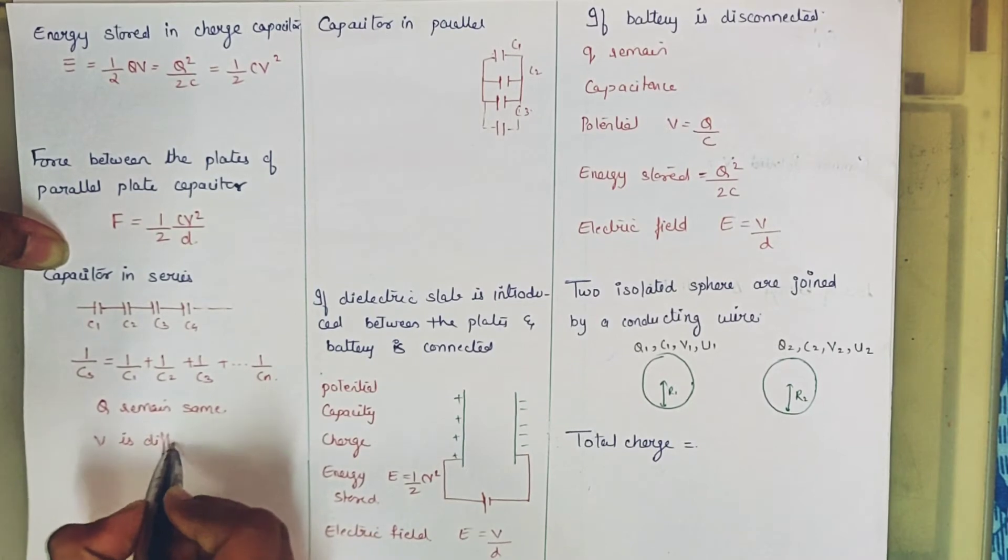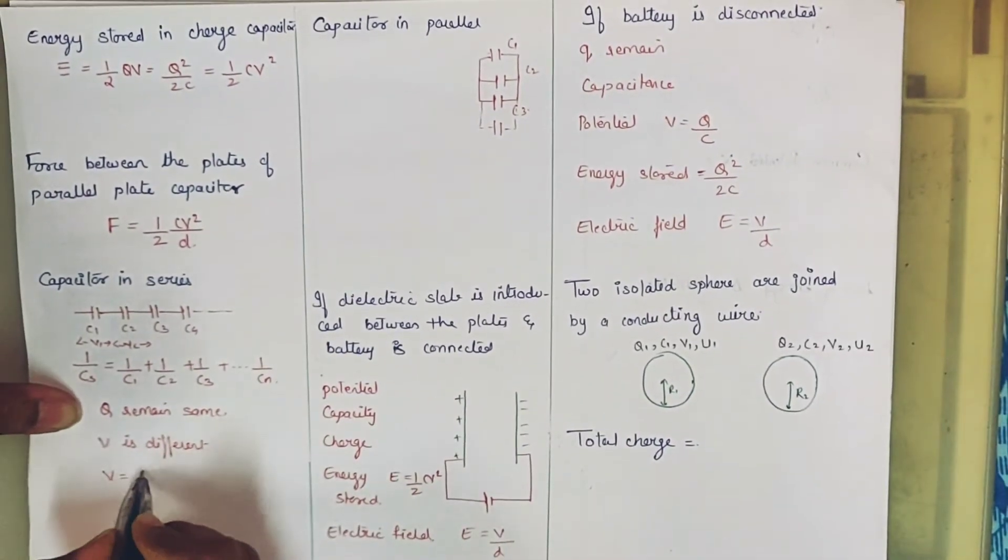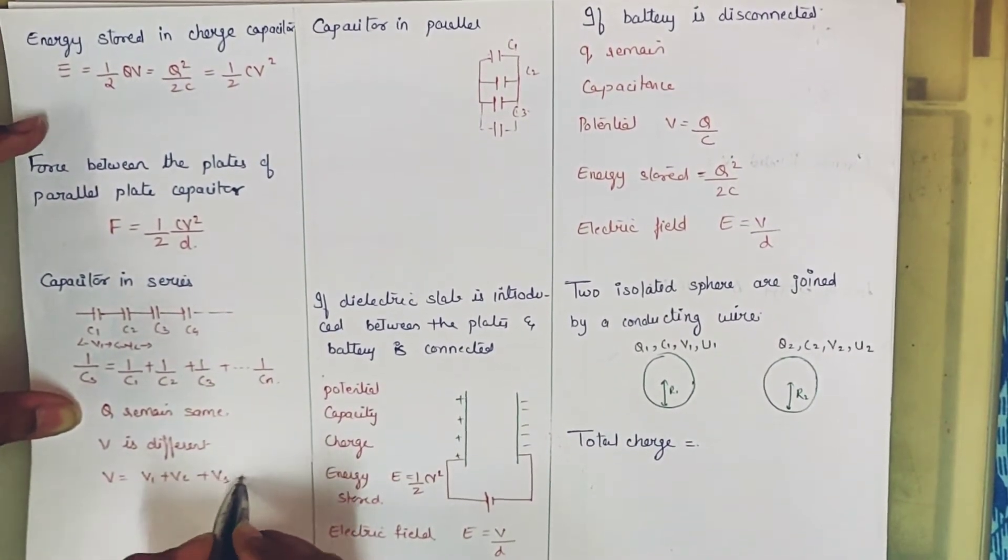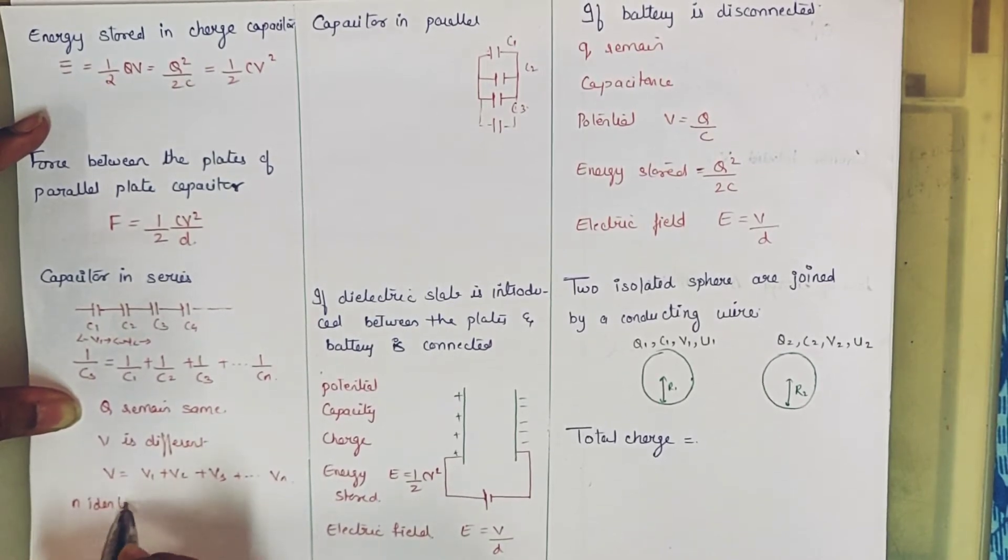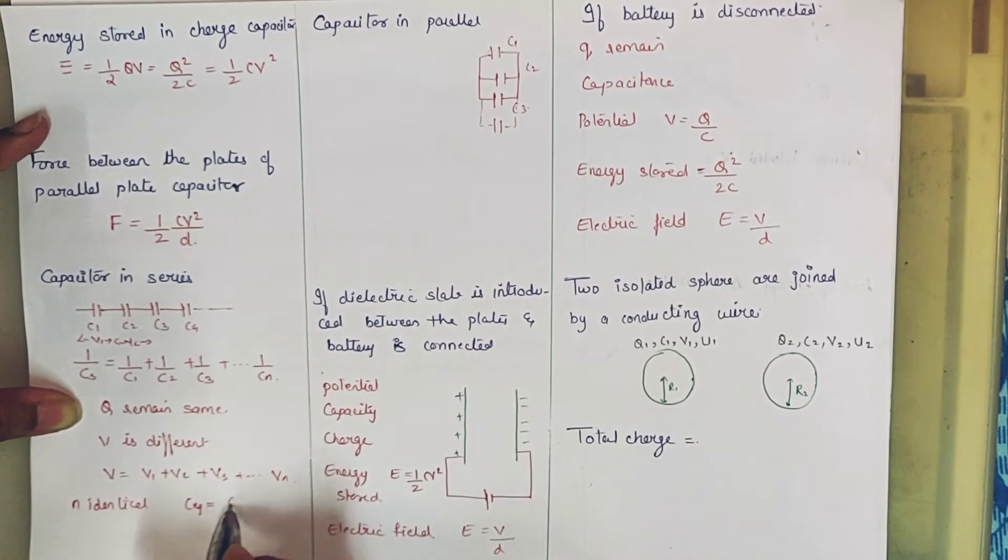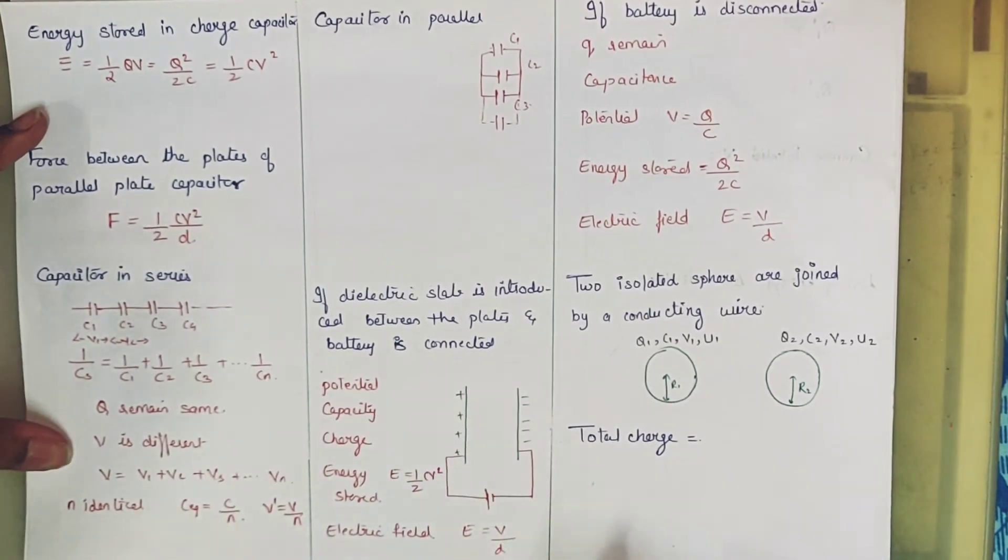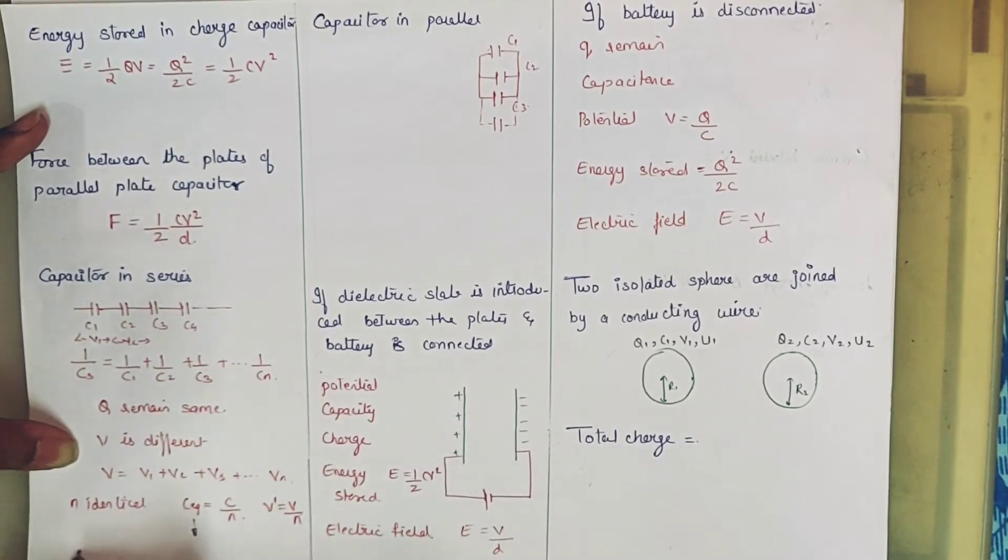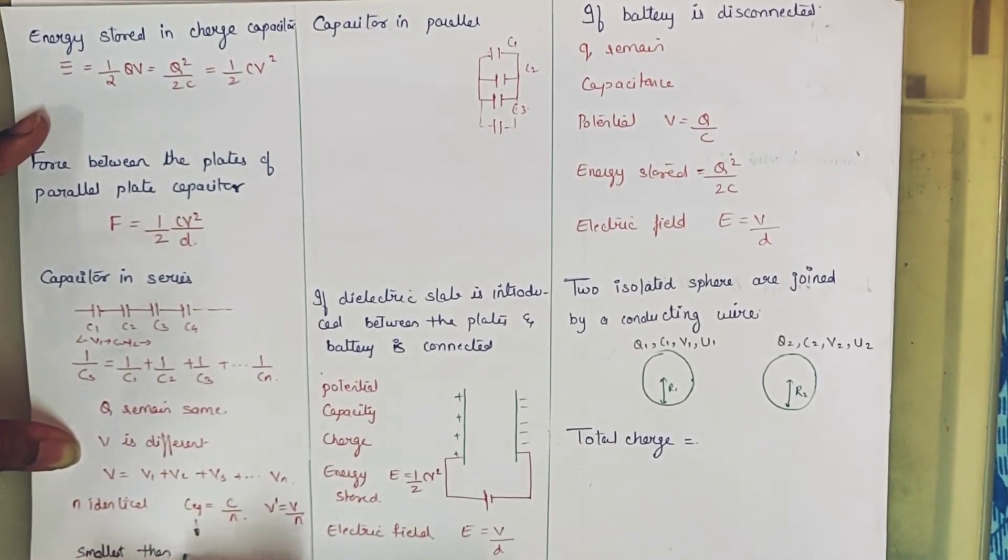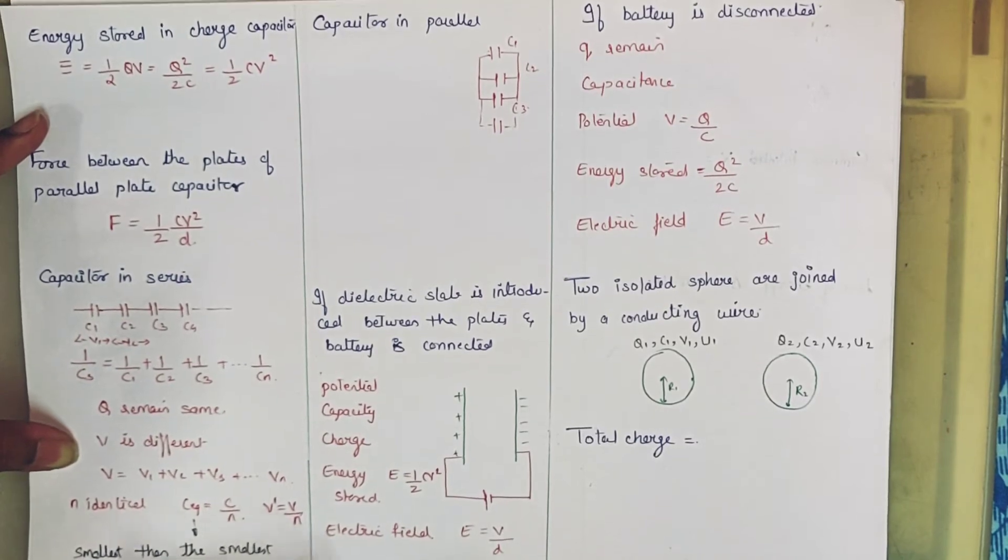But what would be different here? The potential difference. So V is different. That means the potential V will be V1 plus V2 plus V3 plus dot dot dot Vn. If we had N identical capacitors in series then the result will be C equivalent equals C by N, and the complex potential will be total potential divided by the number of capacitors. We must remember here that value of C equivalent will be smallest, smallest than the smallest capacitance.